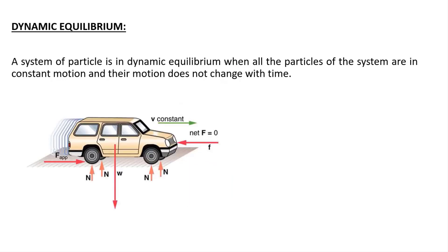Dynamic equilibrium: a system of particles is in dynamic equilibrium when all the particles of the system are in constant motion and their motion does not change with time. There is a slight difference between static and dynamic equilibrium. Static means at rest and dynamic means in motion, but in both cases the body experiences equilibrium — the net force acting on that body will always be zero.